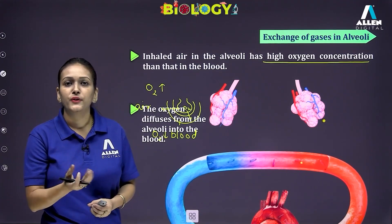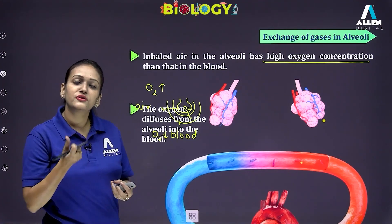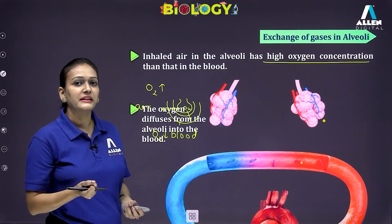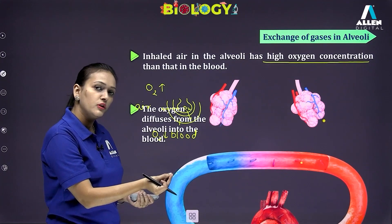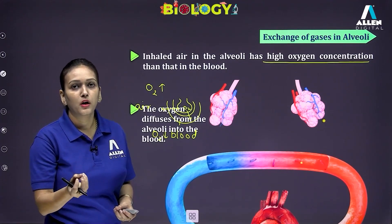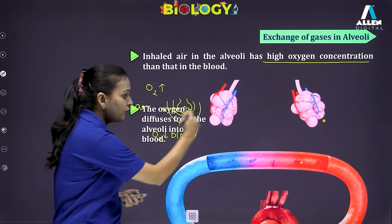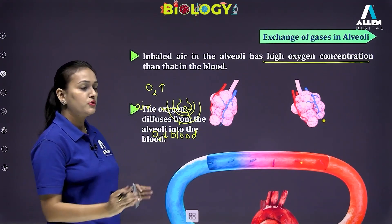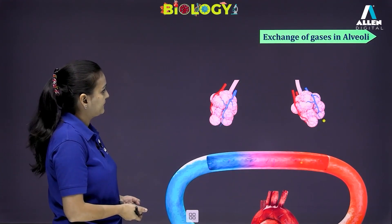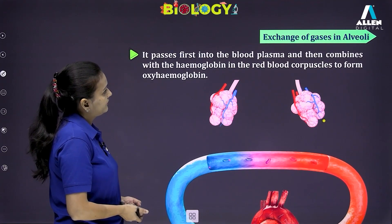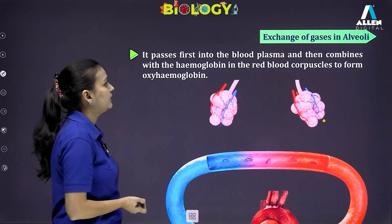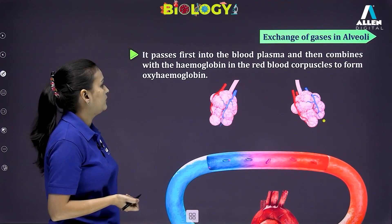Oxygen initially moves into the blood plasma, and then within the blood there are red blood cells containing the oxygen-binding hemoglobin pigment. Hemoglobin has a very good affinity for oxygen gas, so oxygen from the plasma moves into the RBC and binds with hemoglobin to form a temporary compound — oxyhemoglobin. In this form, most of the oxygen gets transported to the entire body.